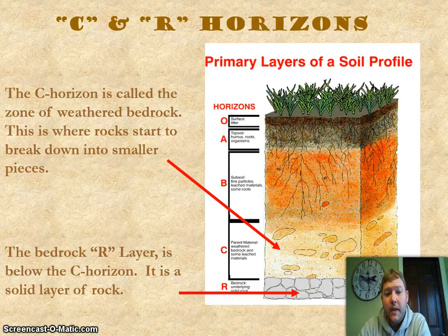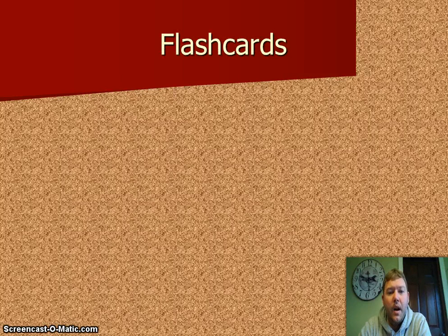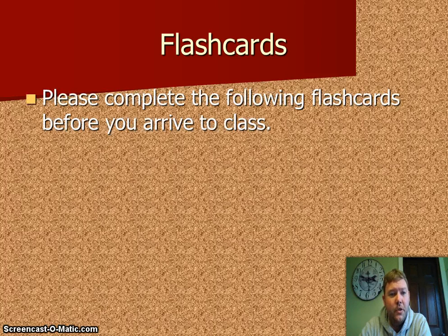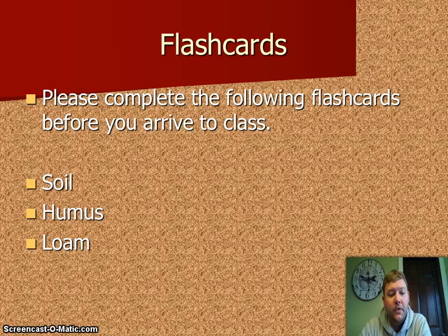Those are our main soil horizons: O, A, B, C, R in that order. Three flashcards I need you to make and have ready when you come to class tomorrow — all the definitions are right here in your notes. Number one: a flashcard for soil. Number two: a flashcard for humus. And finally, a flashcard for loam. We'll see you in class.